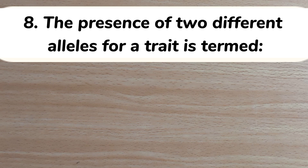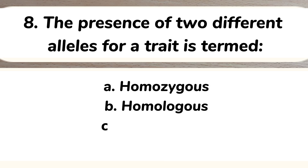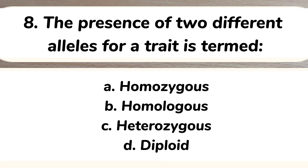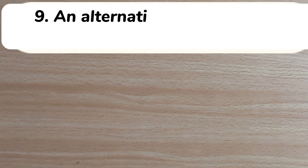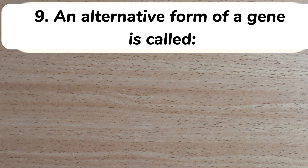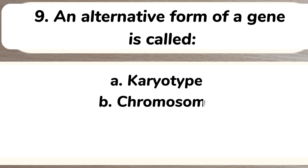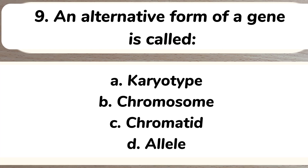Answer: C) heterozygous. Number nine: an alternative form of a gene is called A) karyotype, B) chromosome, C) chromatid, D) allele. Answer: D) allele.